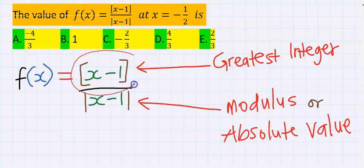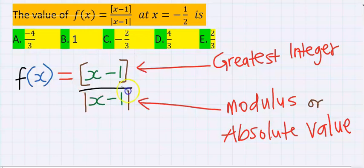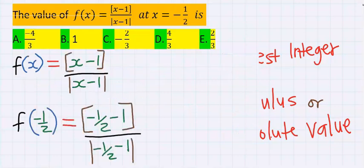the numerator x minus 1 is enclosed in a greatest integer function, while at the denominator, x minus 1 is enclosed in a modulus or absolute value function. The first step is,